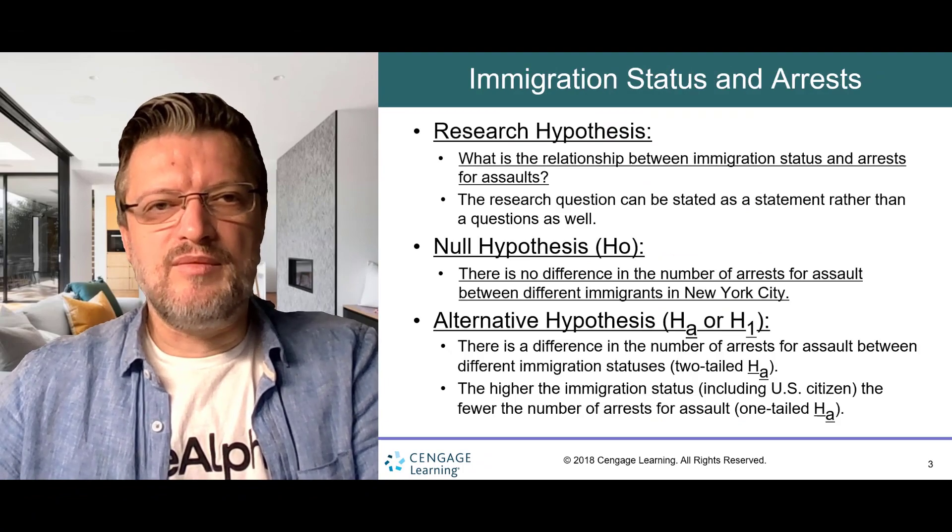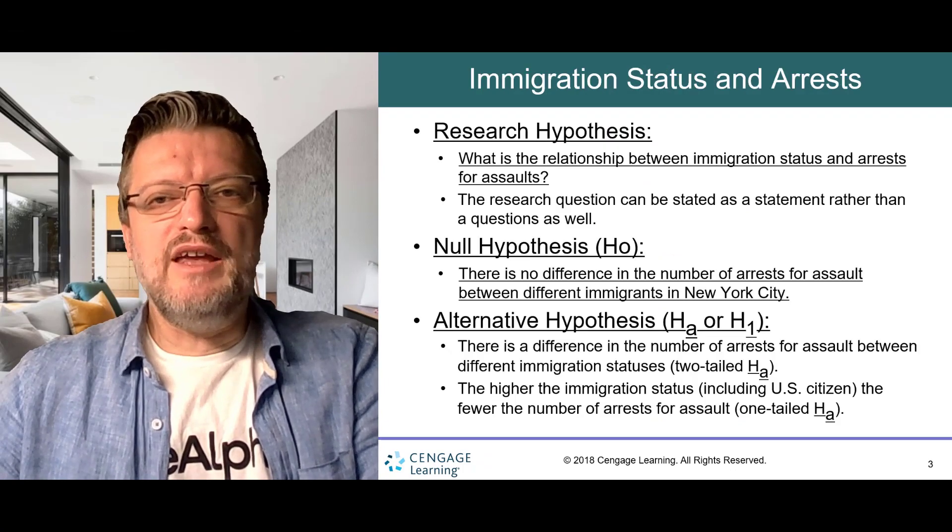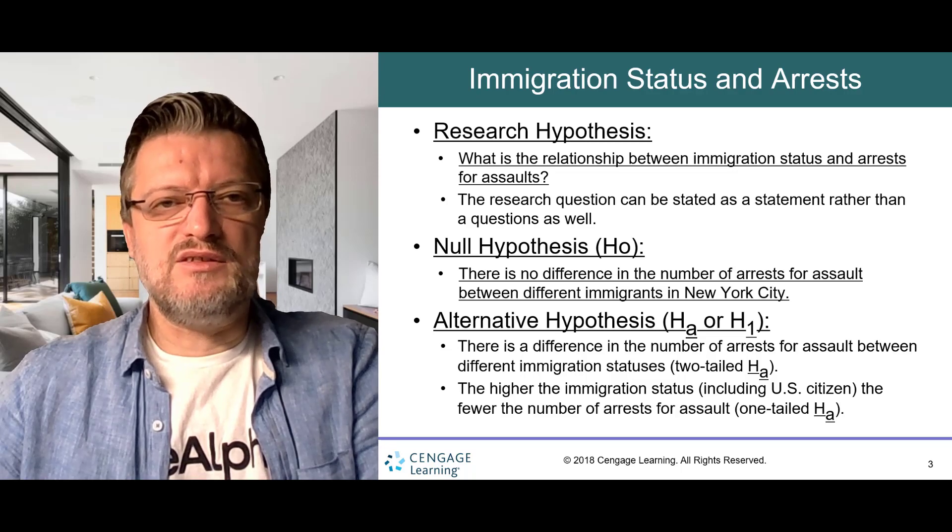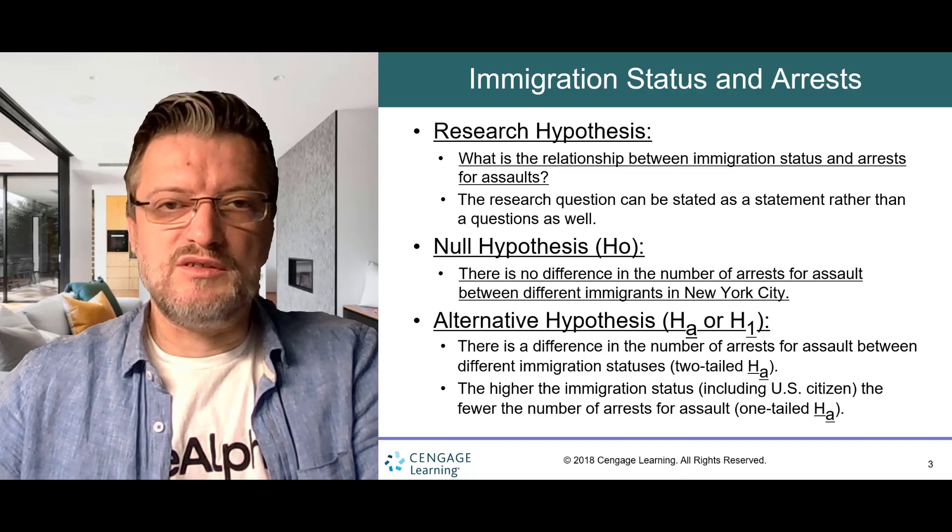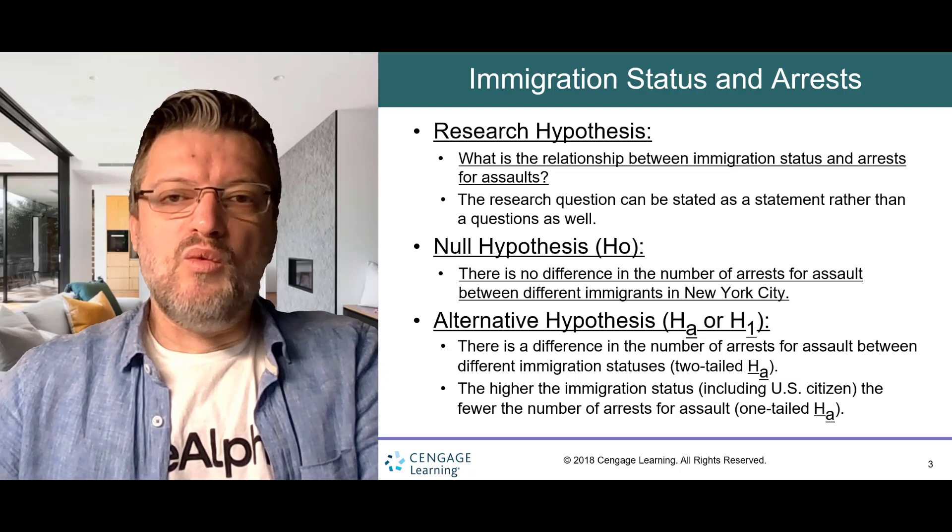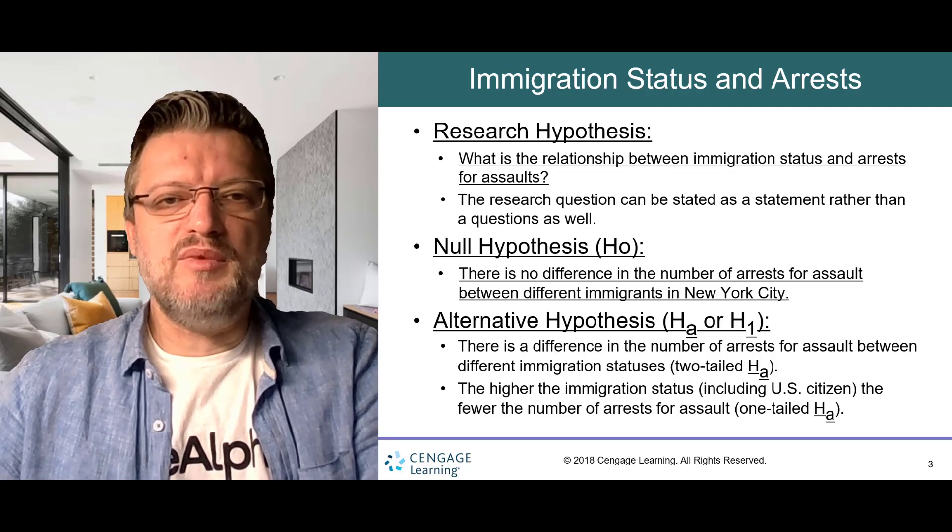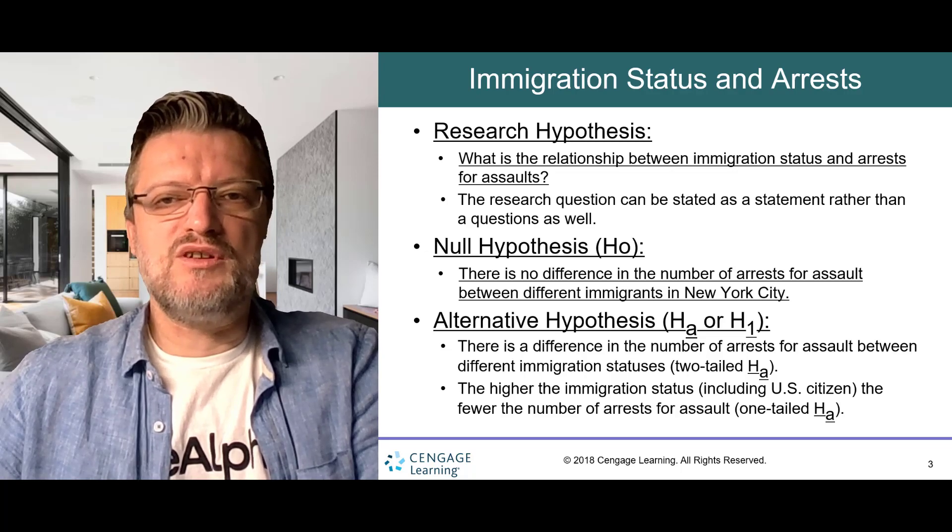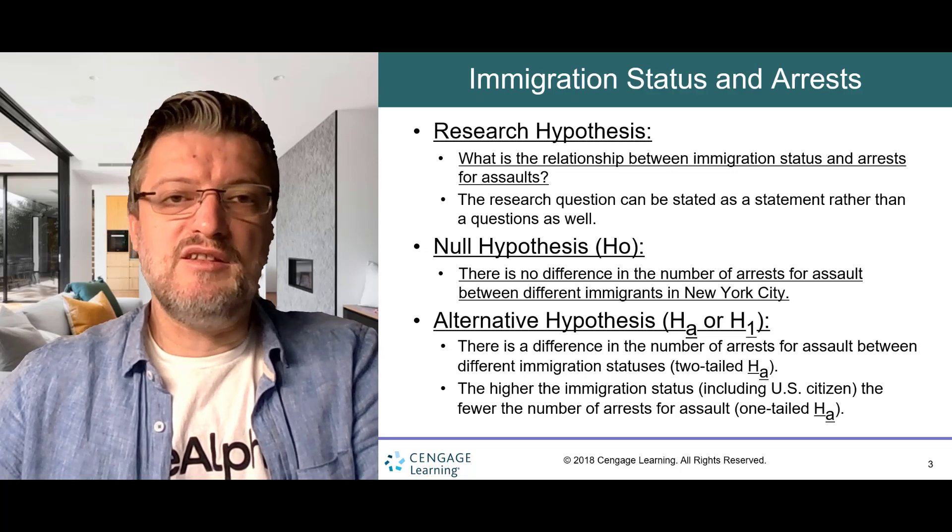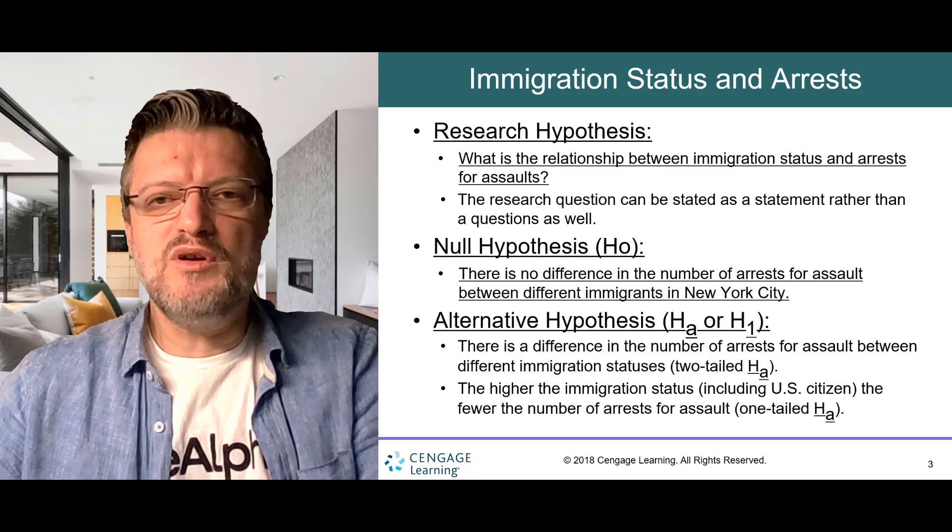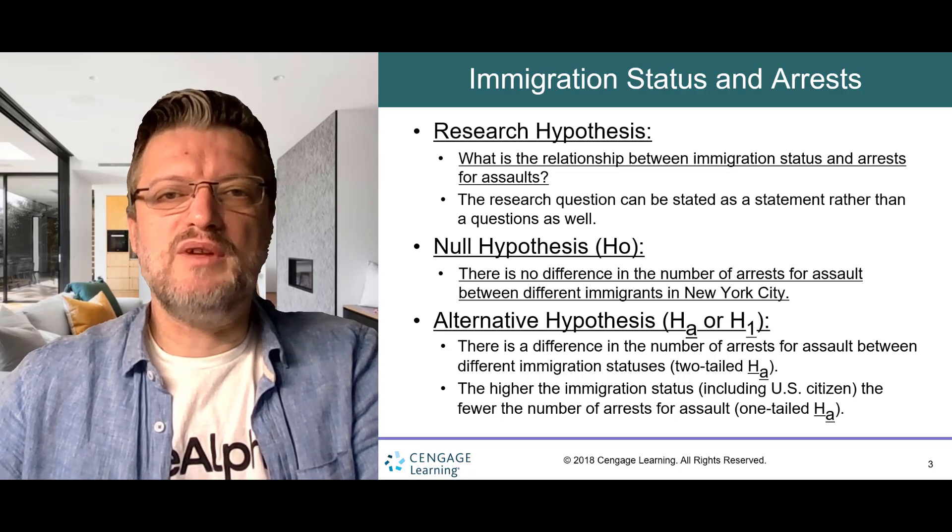Let's take an example. Let's say that we are interested in the immigration status and arrests for assaults. One might have initially observed a relationship and poses the general research question that the more stable a person is in terms of immigration status, the fewer arrests for assault that person would have.